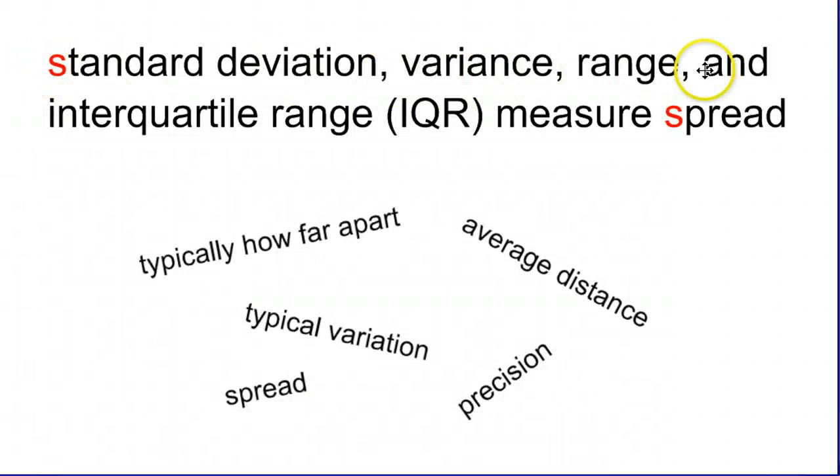Standard deviation, variance, range, and IQR measure the spread, which is another way of saying the average distance apart. The typical variation, typically how far apart.